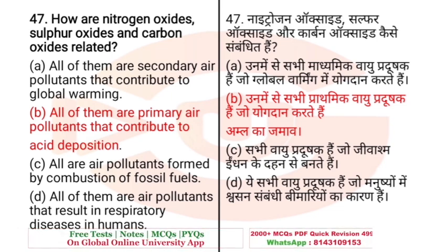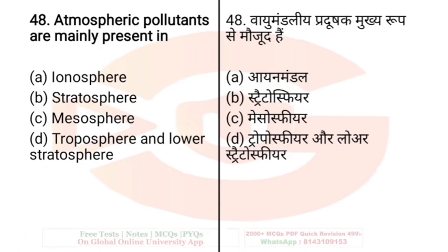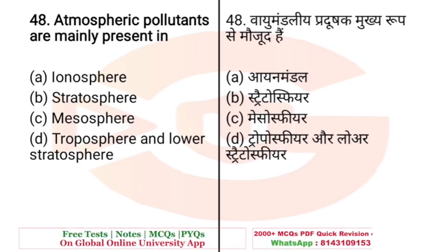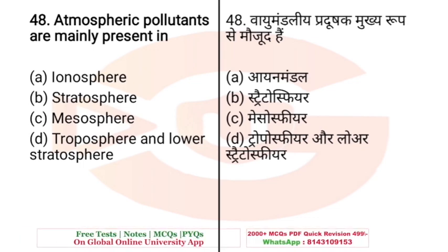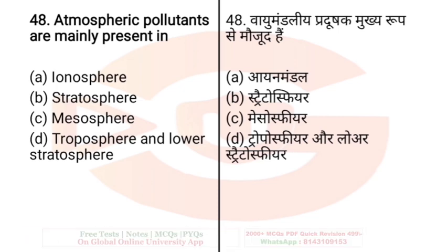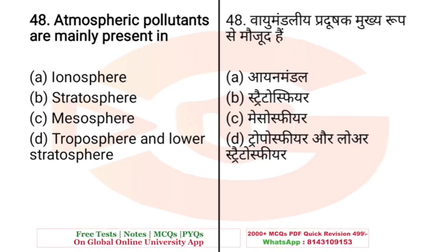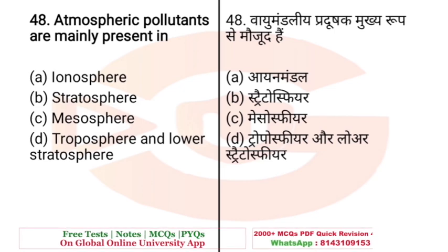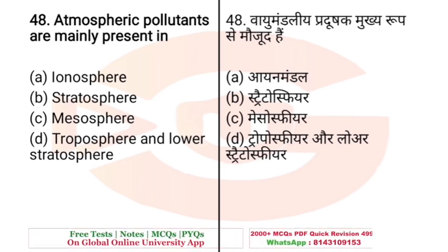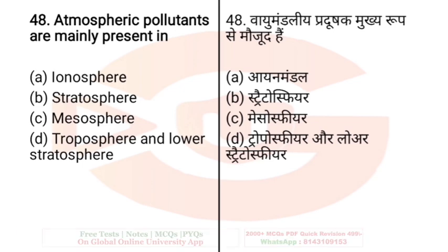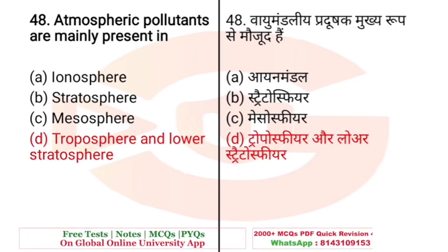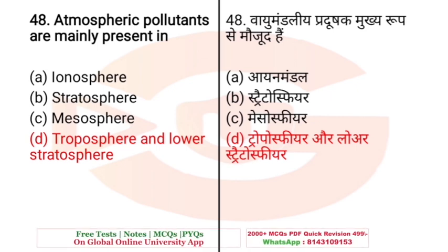Question: Atmospheric pollutants are mainly present in — A. Ionosphere, B. Stratosphere, C. Mesosphere, D. Troposphere and lower stratosphere. The right answer is D — troposphere and lower stratosphere.